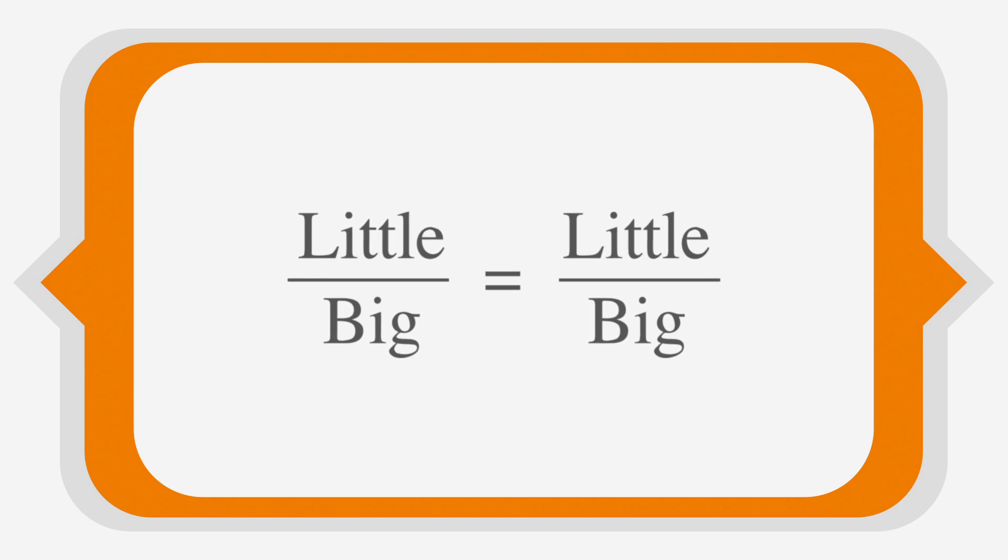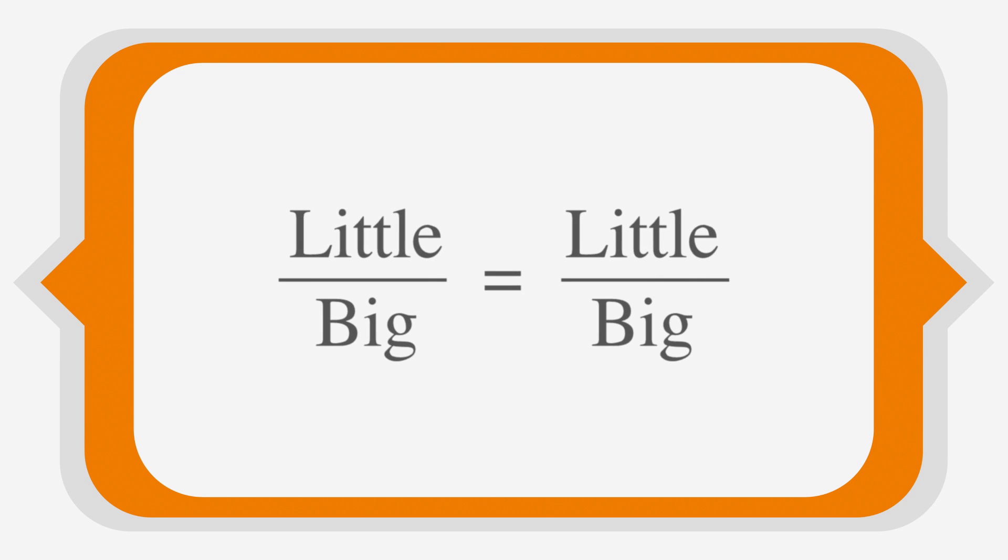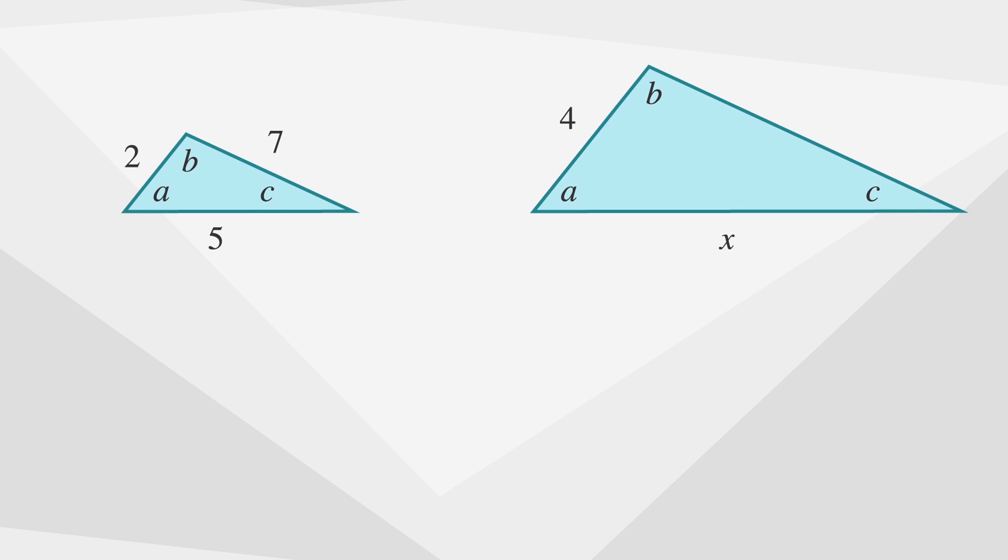If two triangles are similar then the ratio of the corresponding sides stays the same for all three sides. An easy formula to use for similar triangle problems is little over big equals little over big. We call this ratio the scale factor and it stays the same for all of the corresponding sides. We can see that the side measuring two and its corresponding side measuring four are in the little to big ratio of two to four. This ratio is the scale factor and we can reduce it to one to two.